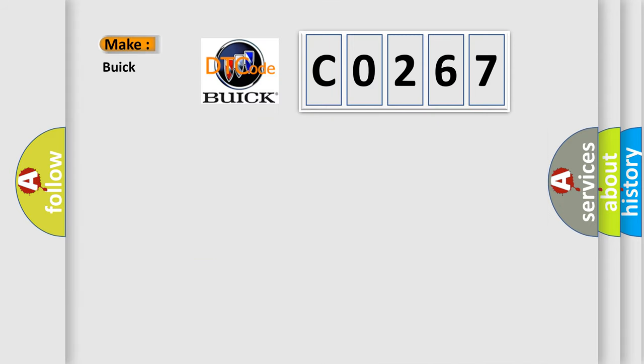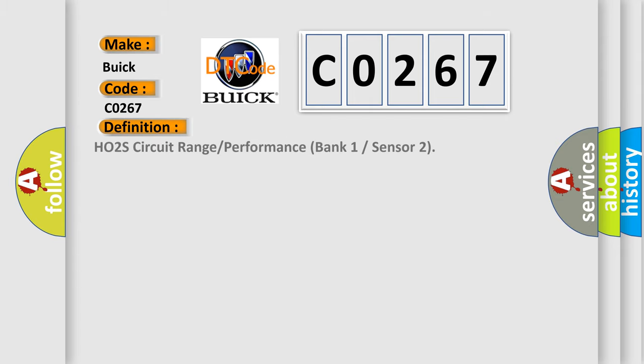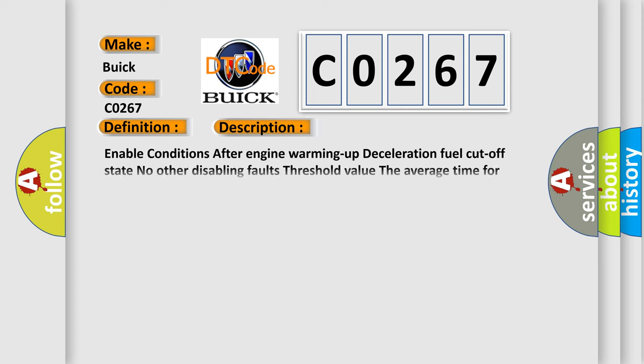So, what does the diagnostic trouble code C0267 interpret specifically for Buick car manufacturers? The basic definition is: HO2S circuit range or performance bank 1 sensor 2. And now this is a short description of this DTC code.